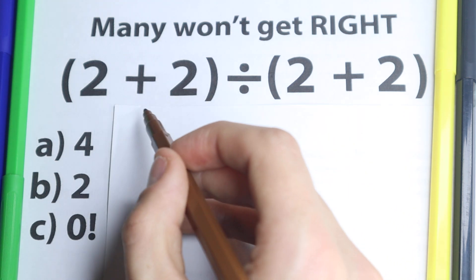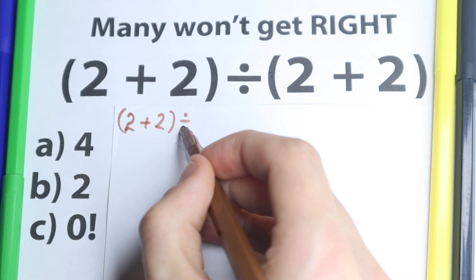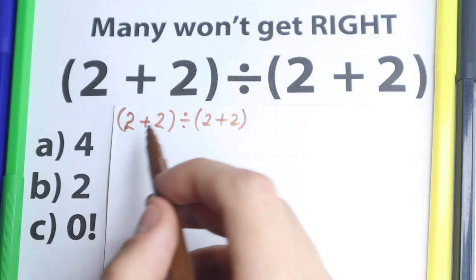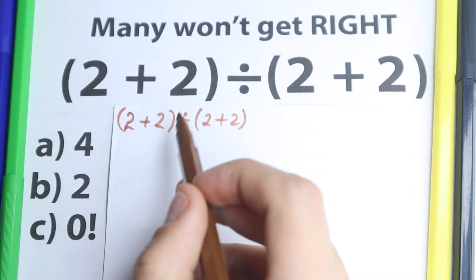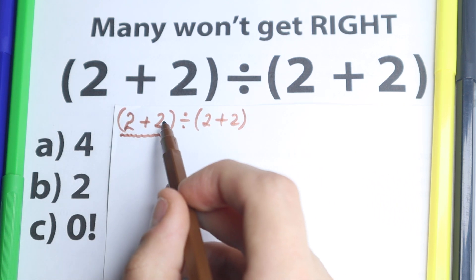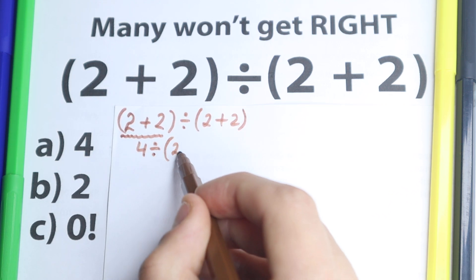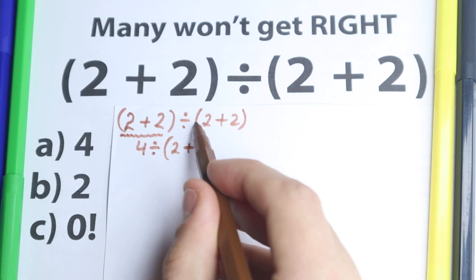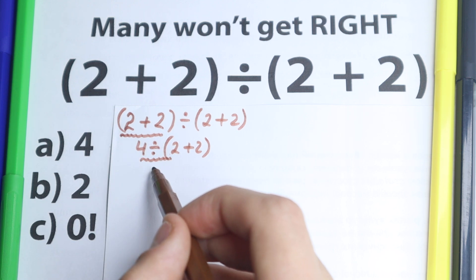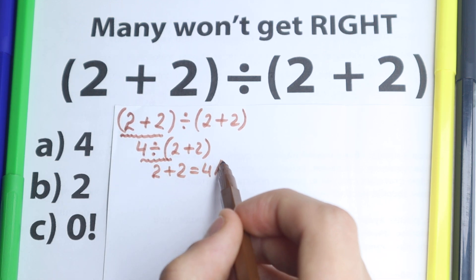Okay, first of all let me rewrite this expression. We have 2 plus 2 and we divide it by 2 plus 2. The first way to solve this — and I'm not yet saying whether it's correct or incorrect — is to go from left to right. So 2 plus 2 equals 4, giving us 4 divided by 2, plus 2 in parentheses. Going left to right again: 4 divided by 2 equals 2, and 2 plus 2 equals 4. This gives us option A.